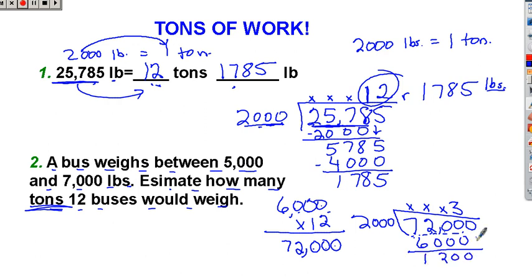Bring down the 0. Now I have 12,000. How many 2,000s are in 12,000? 2 times 6 is 12. So 6 times 2,000 is 12,000. Subtract and we get no remainder. So the answer here is 36 tons. 36 tons.